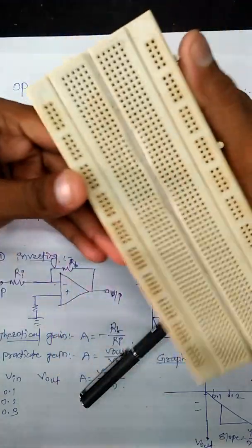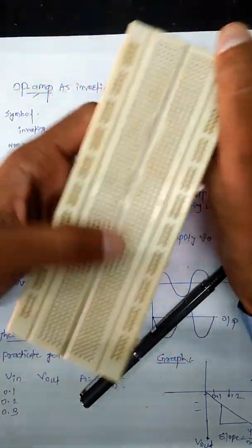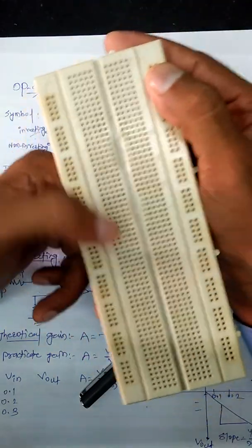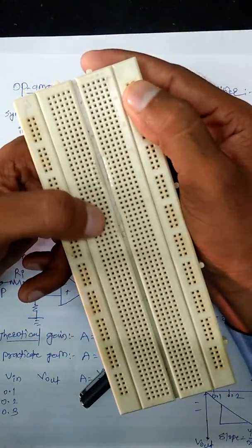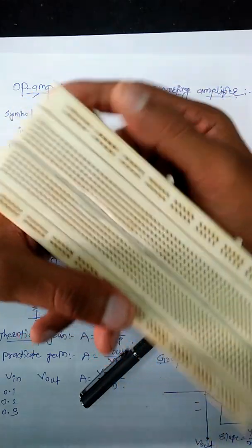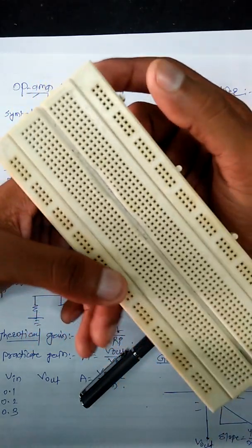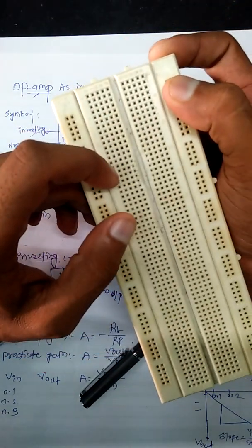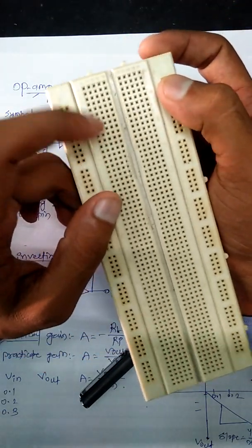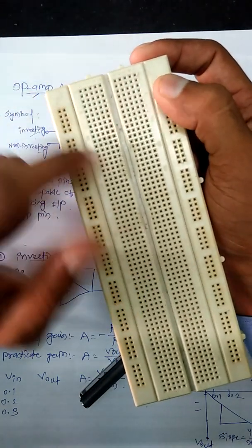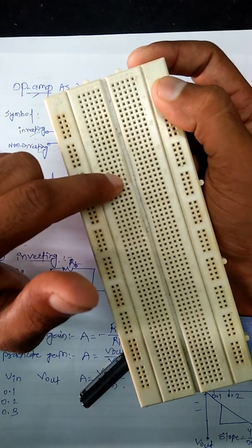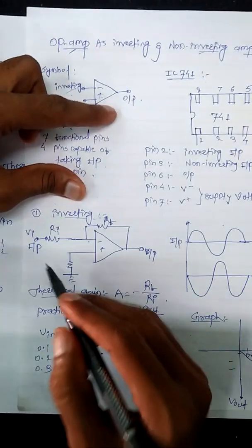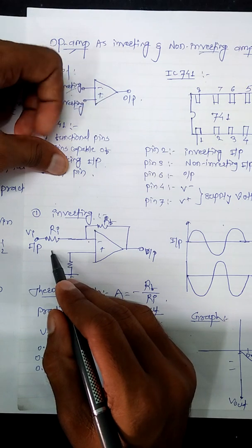Next we require the breadboard. In that breadboard we place the IC anywhere. Then on that IC we are able to give the input terminals. We have a battery — we are supplying the voltage to the input terminals. Whenever we are discussing the inverting amplifier, we are giving the signal to the inverting terminals.